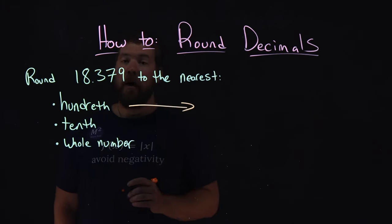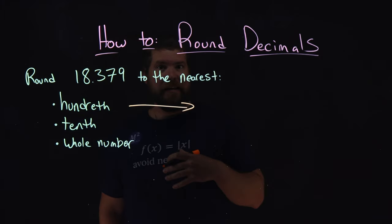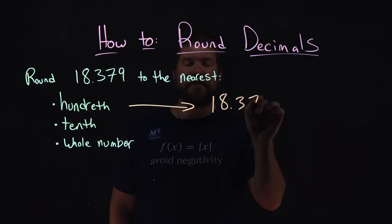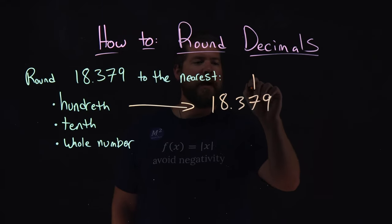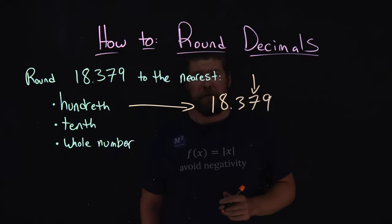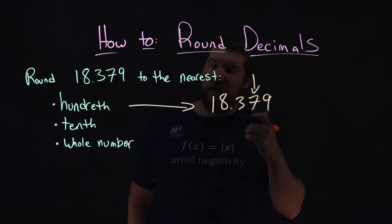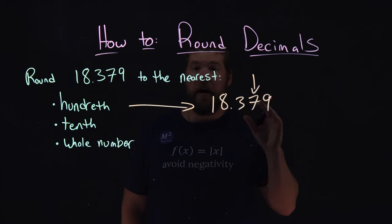So, let's start with the hundredth. We want to look at the hundredths place. 18.379. And what we're looking at here is that 7. The 7 here, we look to what's to the right of the 7. Is that number a 5 or larger? And it is. It's a 9.